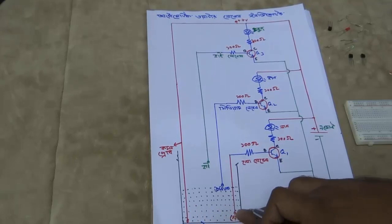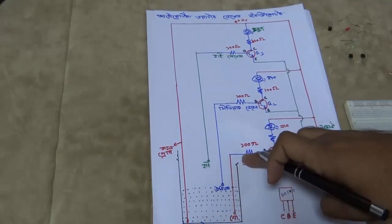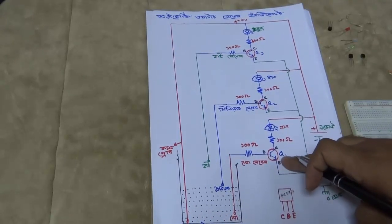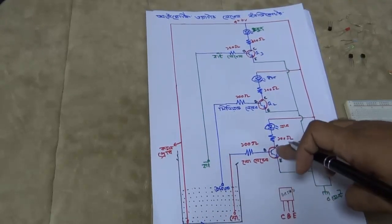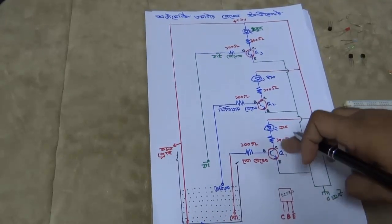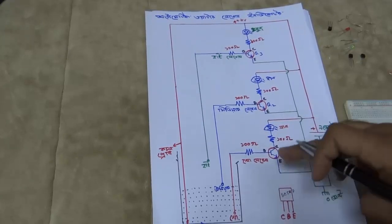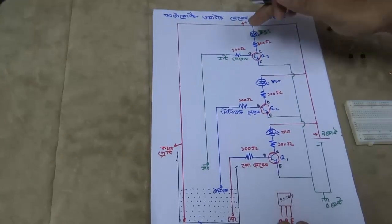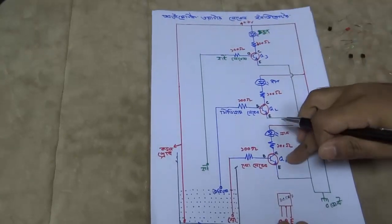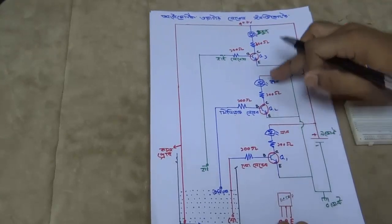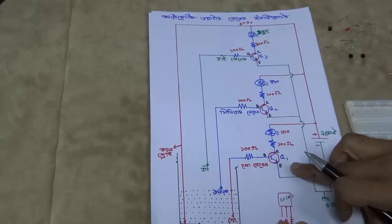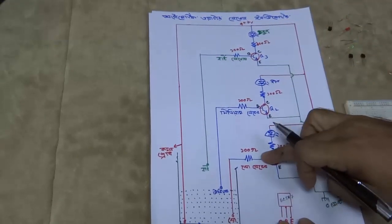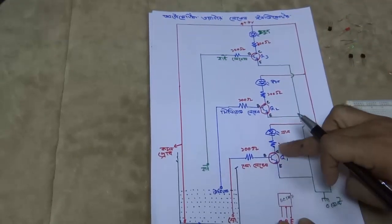The positive voltage is applied to the transistor. There are three transistors: Q1, Q2, and Q3, all BC547.